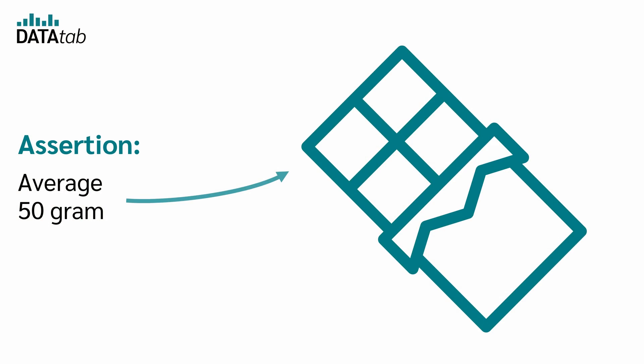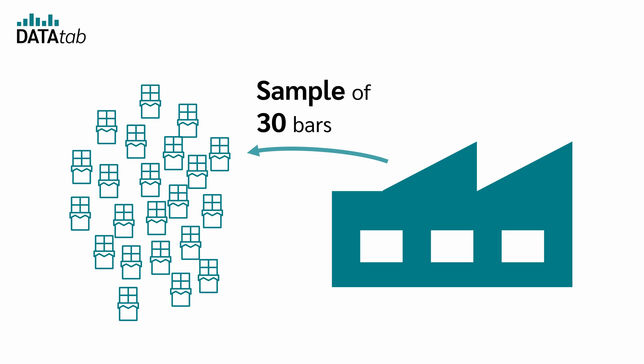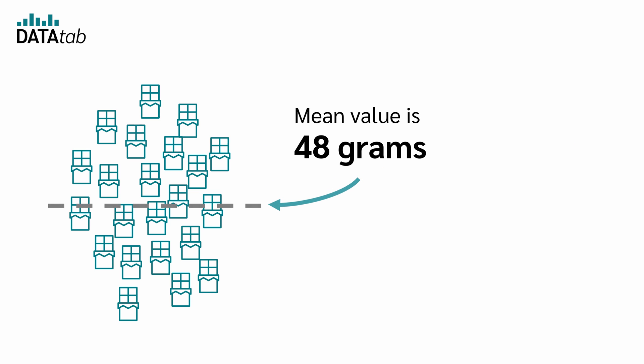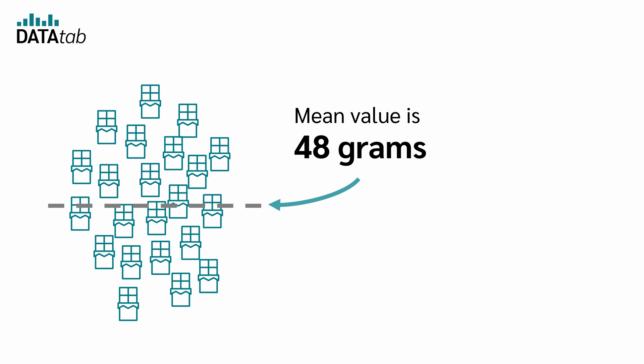An example: a chocolate bar manufacturer claims that its chocolate bars weigh an average of 50 grams. To check this, we take a sample of 30 bars and weigh them. The mean value of this sample is 48 grams. Now we can use a one-sample t-test to check if the mean of 48 grams is significantly different from the claimed 50 grams.